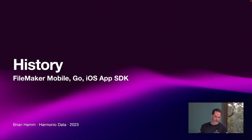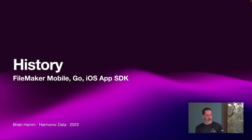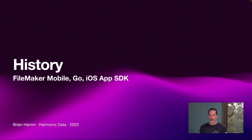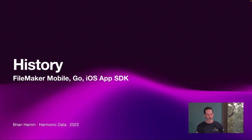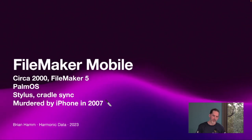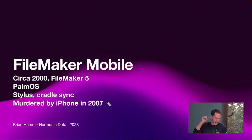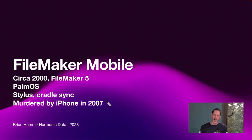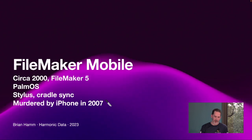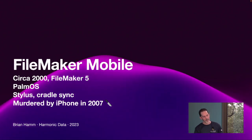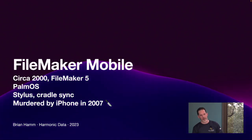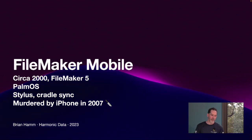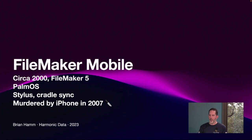The three major points on this timeline are FileMaker Mobile, FileMaker Go, and the iOS App SDK. Some of you may or may not know about FileMaker Mobile — this was a software product released for Palm OS: Palm Pilots, Handspring was another manufacturer. These were basically devices that predated the smartphone. They used a stylus for entry, had horrible handwriting recognition, monochromatic screens, and they didn't work over the internet.